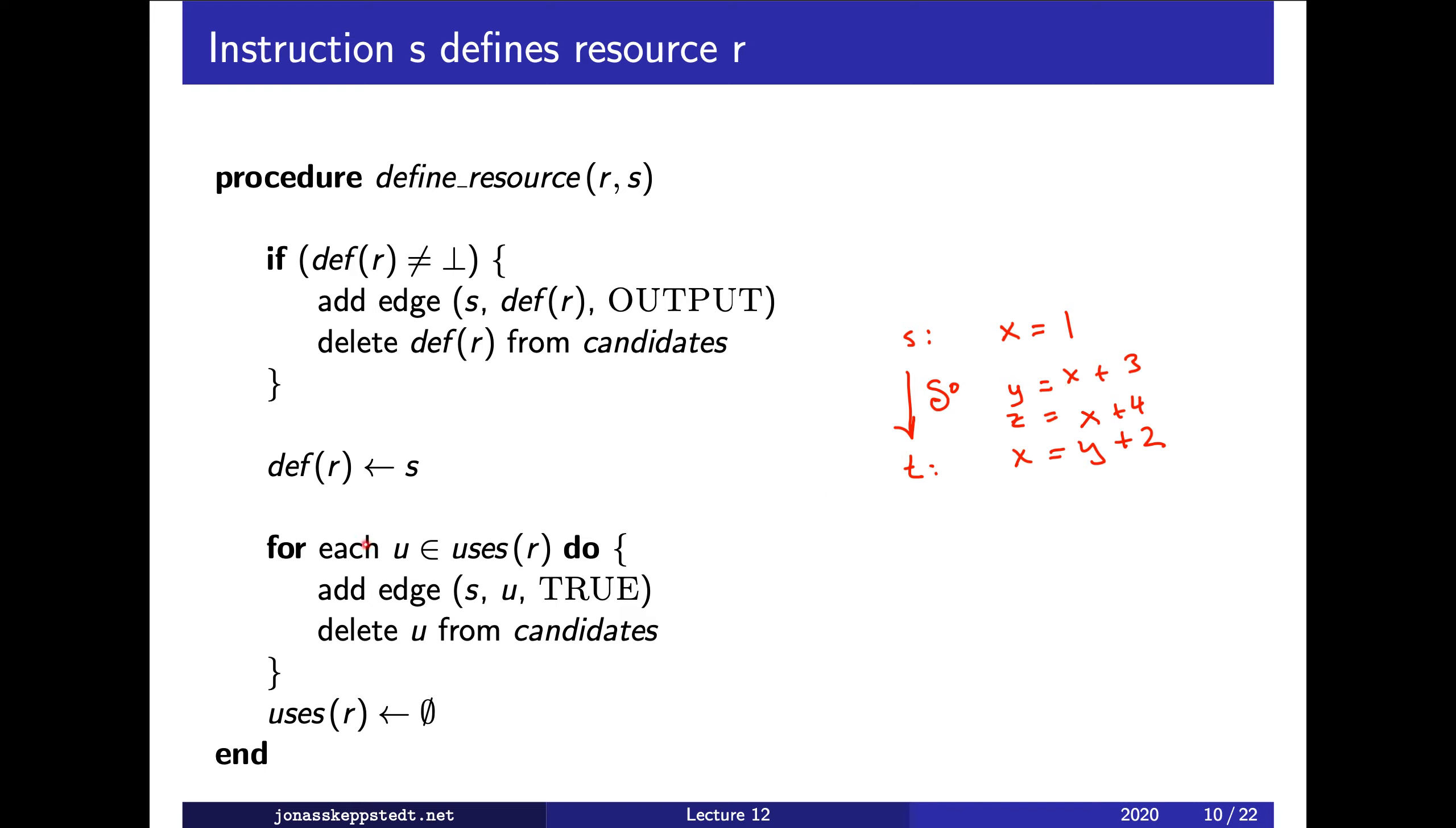So what we do then when we are in s, we add an edge from s to each of these. That's a true dependence, and another one to this one.